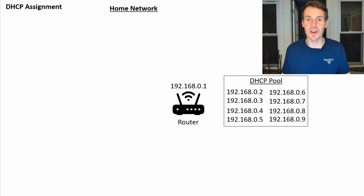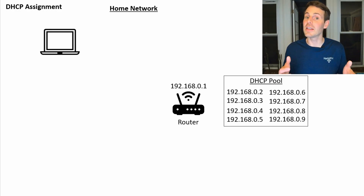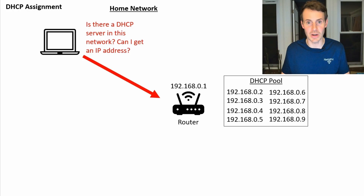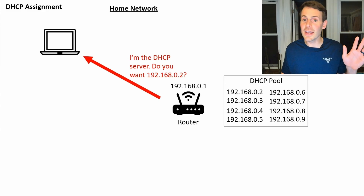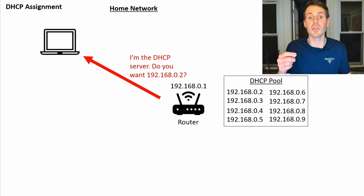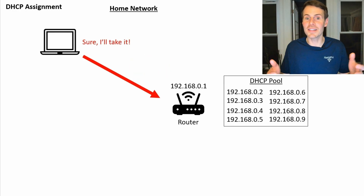Let's simulate a laptop connecting to your router's Wi-Fi network. At this point it doesn't have an IP address yet, so it sends a request out to all the devices on the home network asking: where's the DHCP server? I need an IP address — can somebody help me? Because your router is the DHCP server, it responds by saying: I'm the DHCP server, and then it offers the 192.168.0.2 IP address to the laptop. The laptop says: sure, I'll take it.